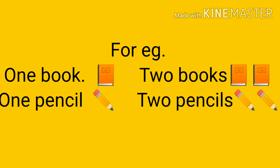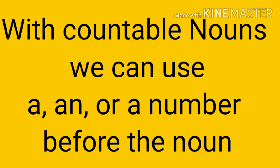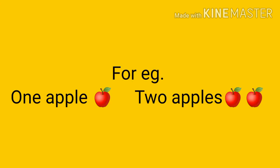Aise nouns jinko hum count kar sakte hain number mein. So with countable nouns we can use a, an, or a number before the noun. Hum countable nouns ke aage a, an, or number laga sakte hain. For example, one apple — ek seb. Two apples — do seb. Toh one or two, humne laya na uske aage number.